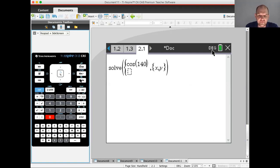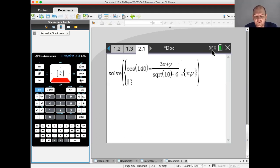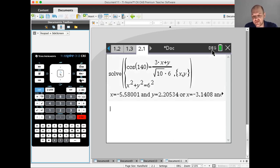So cosine of 140 degrees, because I'm in degree mode, is 3X plus Y over square root of 10 times six. And then, also X squared plus Y squared equals six squared. Well, 36, obviously. And I'm going to get a decimal or decimals, I should say. So I'm getting that. Remember X is a and Y is actually B. So I'm getting that a,b could be negative 5.58 and then 2.205.